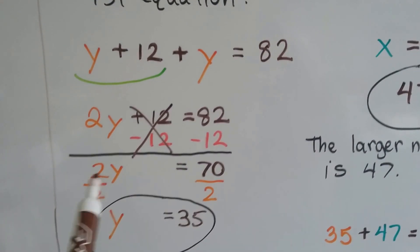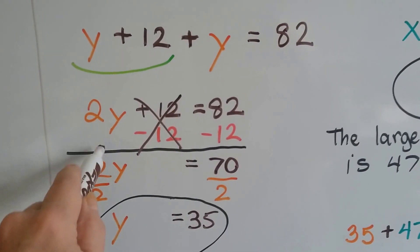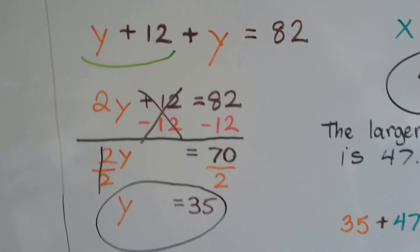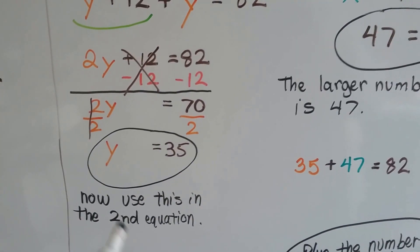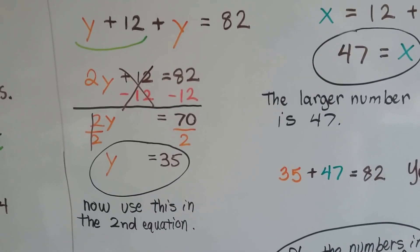We divide both sides by this coefficient 2. We get our buddy the invisible one identity property. So we have 1y is equal to 35. Now we can use this to solve our second equation. Y equals 35.